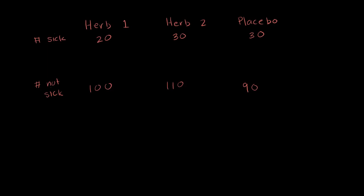Let's say there are a couple of herbs that people believe help prevent the flu. So to test this, what we do is we wait for flu season and we randomly assign people to three different groups. Over the course of flu season, we have them either in one group taking herb one, in the second group taking herb two, and in the third group they take a placebo.